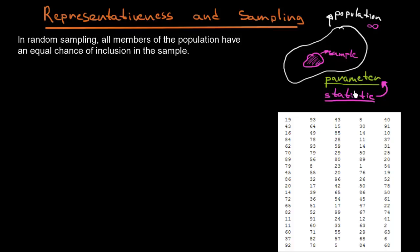To ensure that we are doing things correctly we need to use representativeness and sampling. In random sampling, all members of the population have an equal chance of inclusion in the sample.